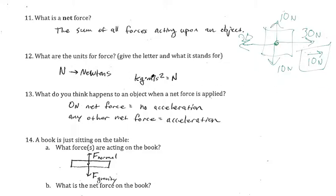Units for force are technically kilogram meters per second squared. If we look at the formula, force equals mass times acceleration. Mass is measured in kilograms and acceleration is measured in meters per second squared. So force should be equal to kilograms times meters per second squared.